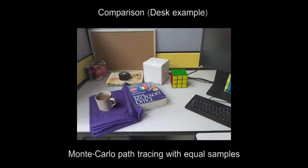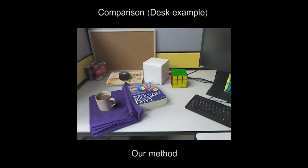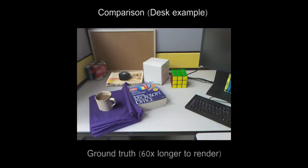We now show still image comparisons. First, here is the result from unfiltered Monte Carlo with equal samples. Note the significant noise in the regions indicated by the red arrows. Here is the result of our method. Note that the noise level is considerably reduced by filtering. Finally, here is the reference image which requires 60 times more time to render.